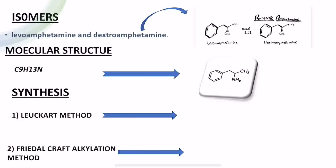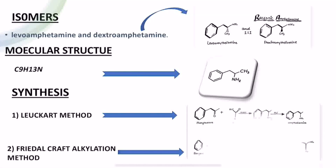The molecular formula is C9H13N. It can be synthesized by two methods: the Leucart method and the Friedel-Crafts alkylation method. In the first, we use phenylacetone and agents such as formic acid and formamide to yield a racemic mixture of R and S enantiomers. In the second method, Friedel-Crafts alkylation of benzene by allyl chloride yields beta-chloropropyl benzene, which is then reacted with ammonia to produce racemic amphetamine.